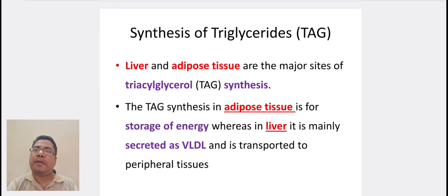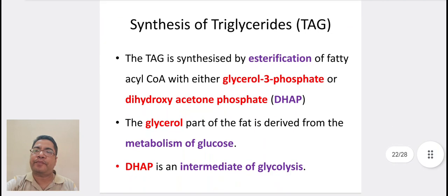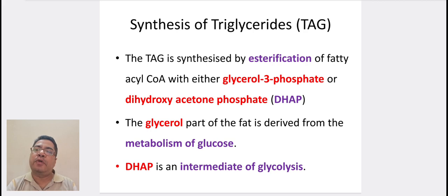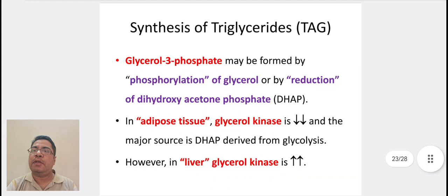Liver and adipose tissue are the major sites of triacylglycerol synthesis. Triacylglycerol synthesis in adipose tissue is for storage of energy, whereas in liver it is mainly secreted as VLDL and transported to peripheral tissues. Triacylglycerol is synthesized by esterification of fatty acyl-CoA with either glycerol-3-phosphate or dihydroxyacetone phosphate. The glycerol part of fat is derived from the metabolism of glucose, and DHAP is an intermediate of glycolysis. Glycerol-3-phosphate may be formed by phosphorylation of glycerol or by reduction of dihydroxyacetone phosphate. In adipose tissue, glycerol kinase activity is low and the major source is dihydroxyacetone phosphate derived from glycolysis.